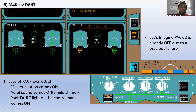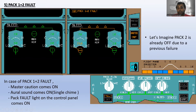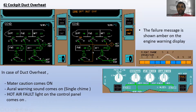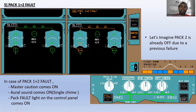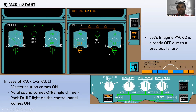In case of pack one and two fault, master caution comes on, oral warning sounds as a single chime, and the pack fault lights on the control panels come on. The message 'air conditioning pack one two fault' appears in amber on the engine warning display. On the bleed page after the fault, pack one is shown as fault and pack two is already off and fault, with the full system shown in amber.